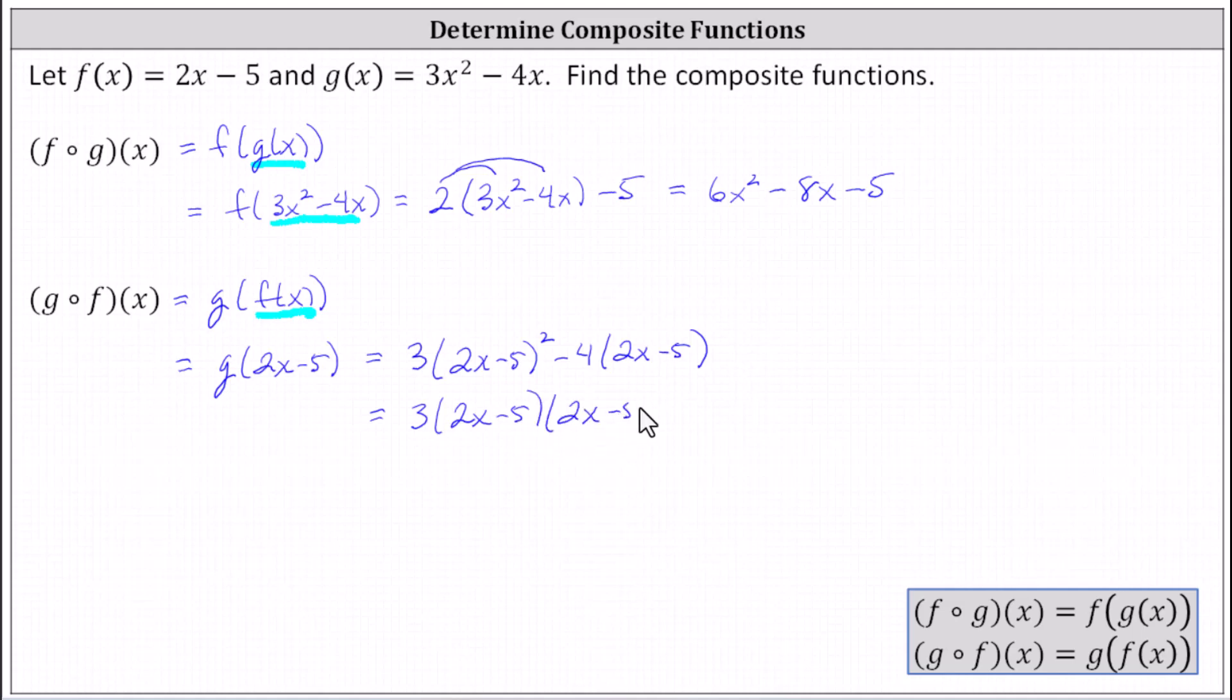We'll begin by multiplying the two binomials. Recall we have four products: one, two, three, and four.